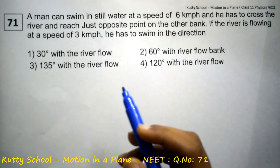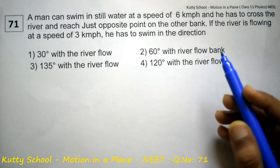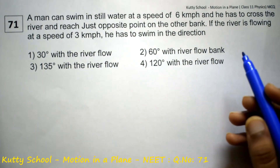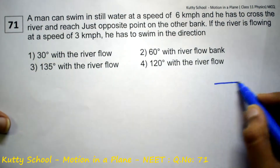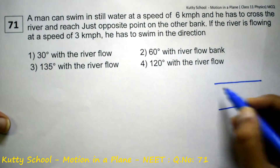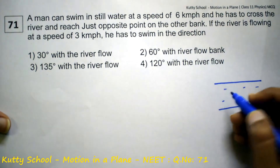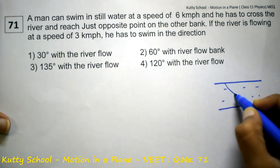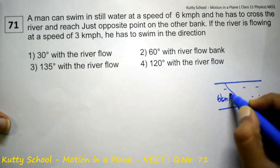A man can swim in still water at a speed of 6 km per hour. Suppose he is in the water — still water — one man is 6 km per hour.